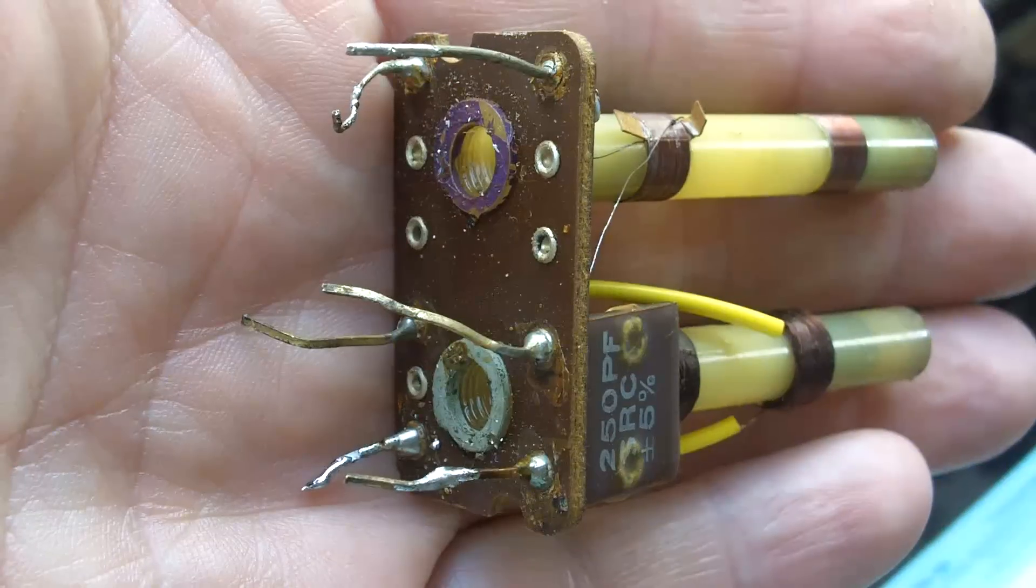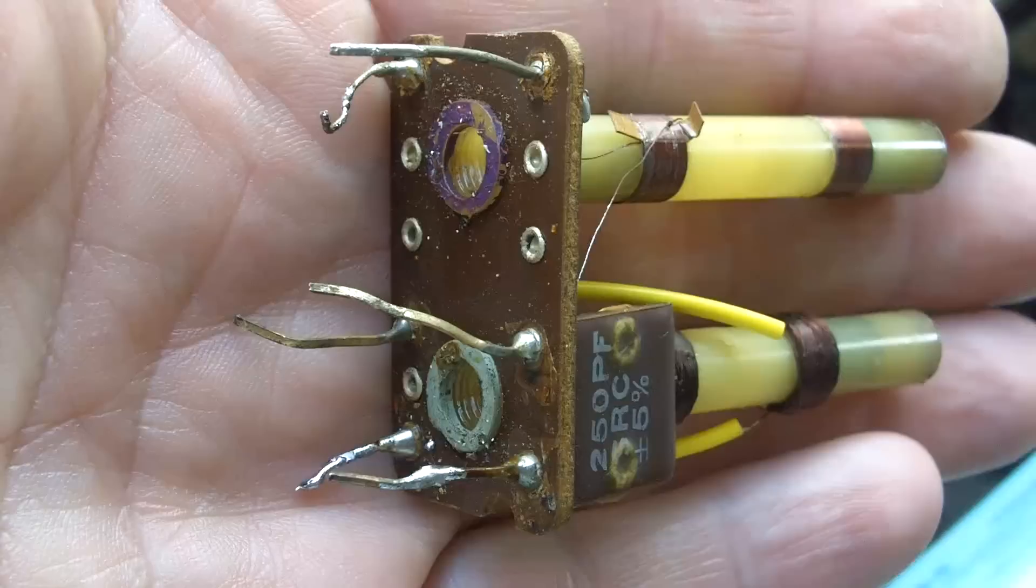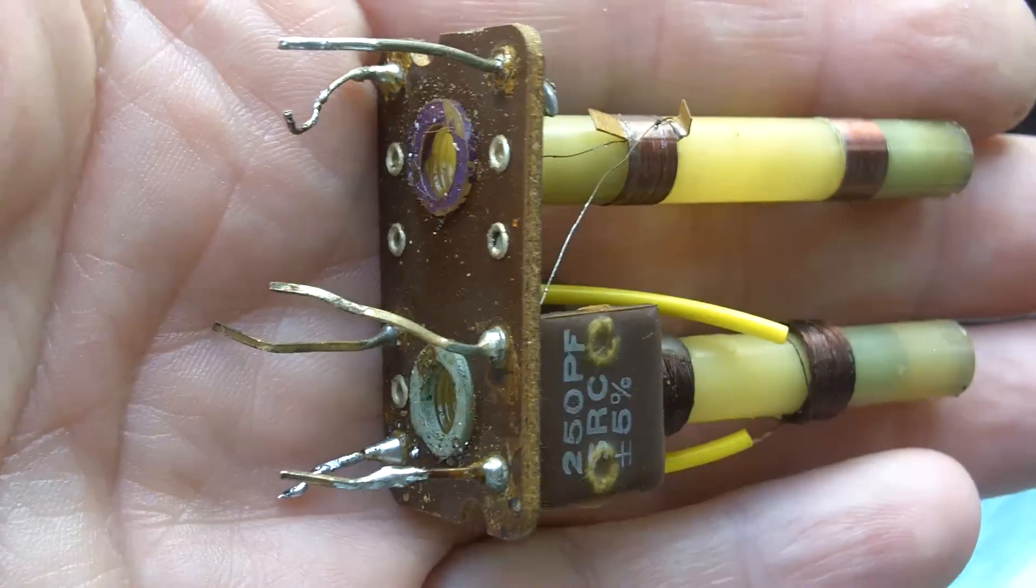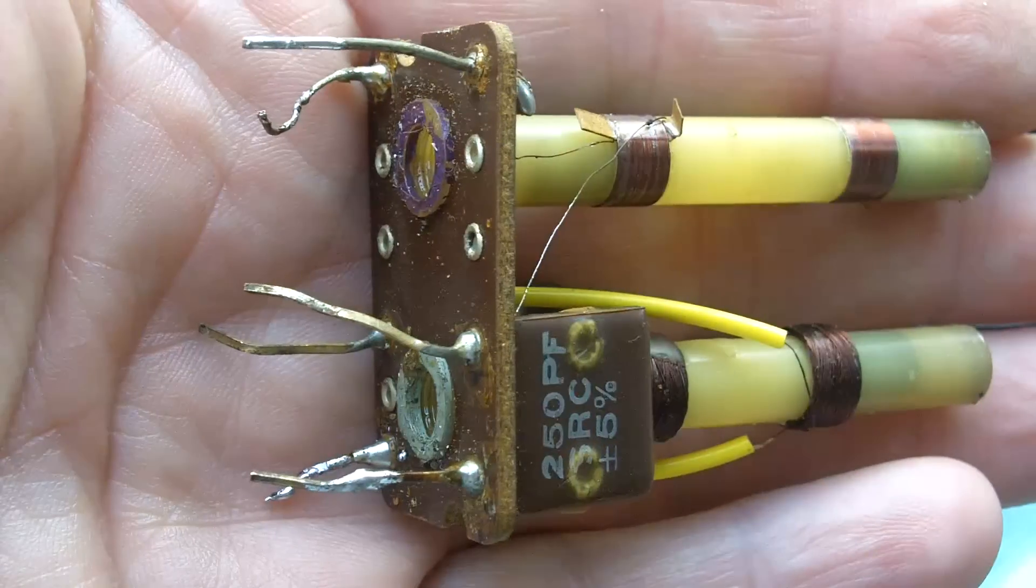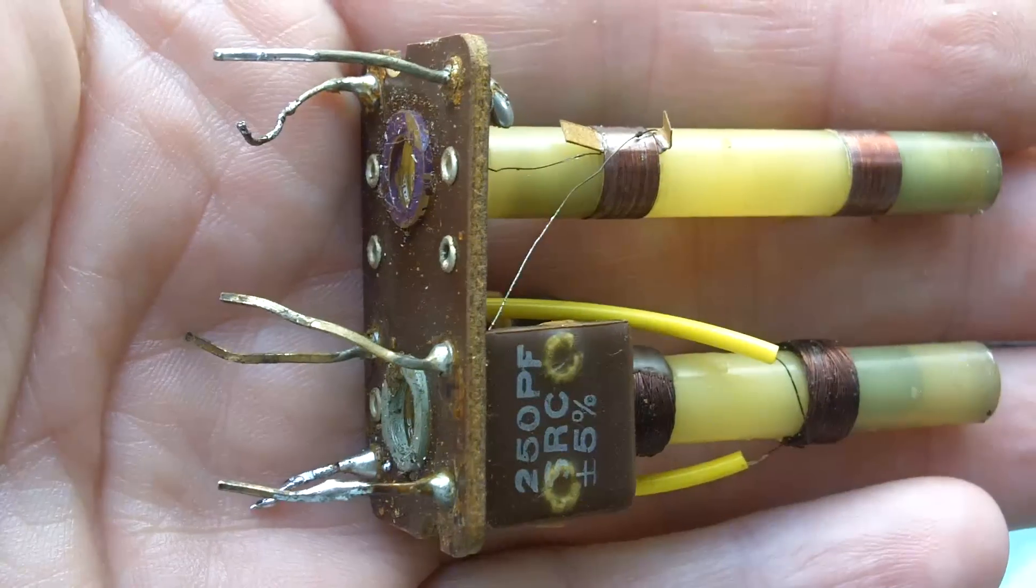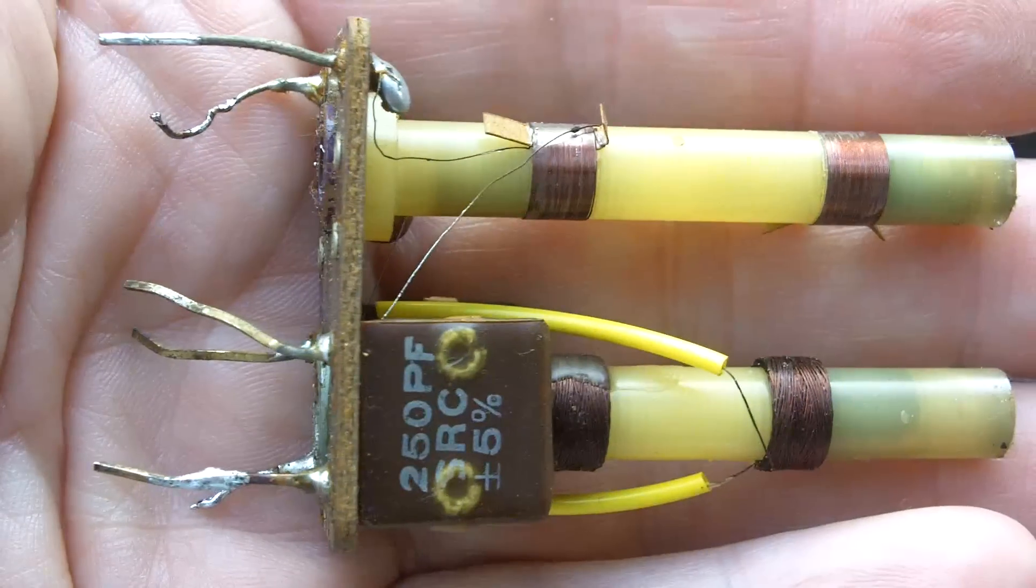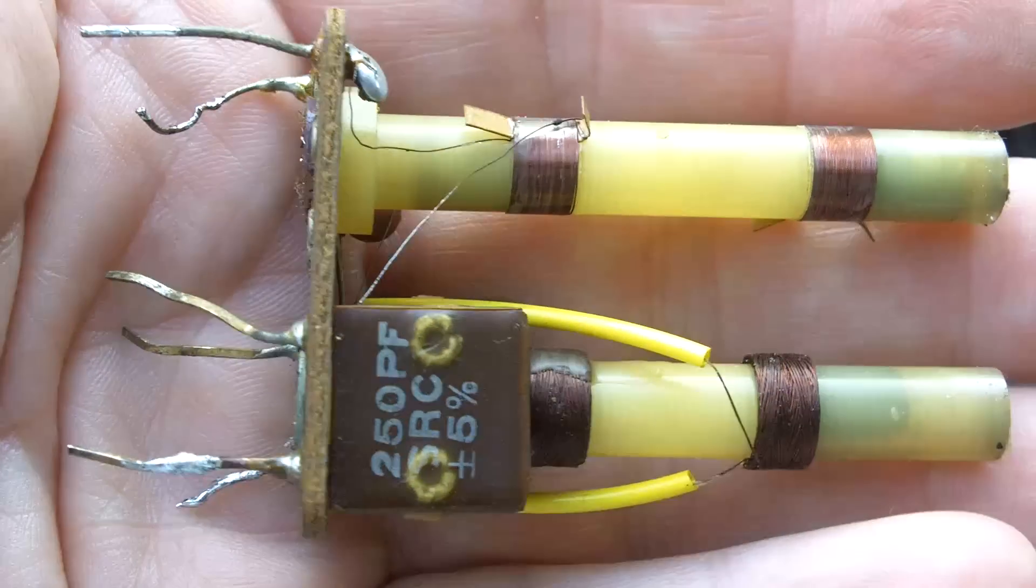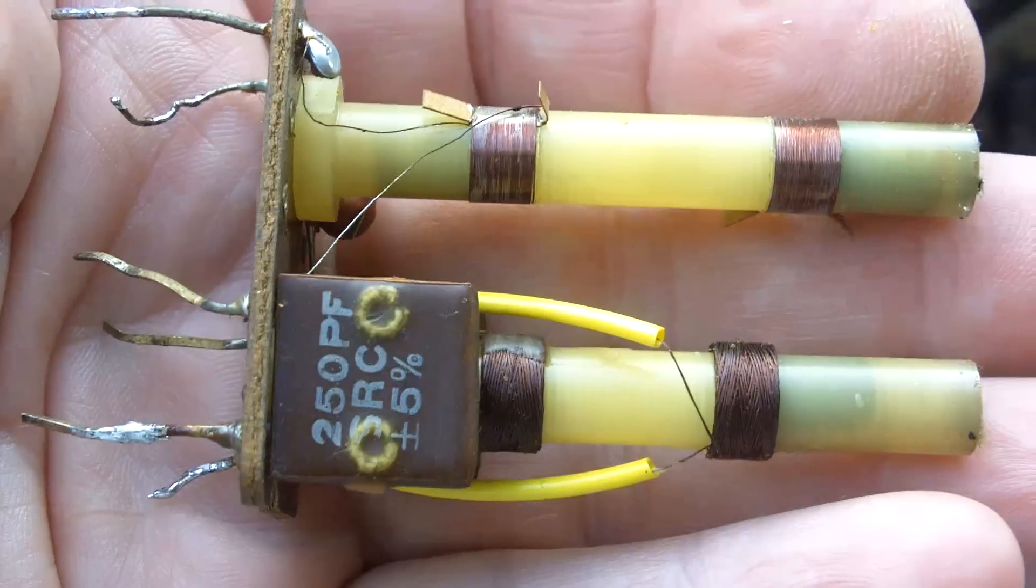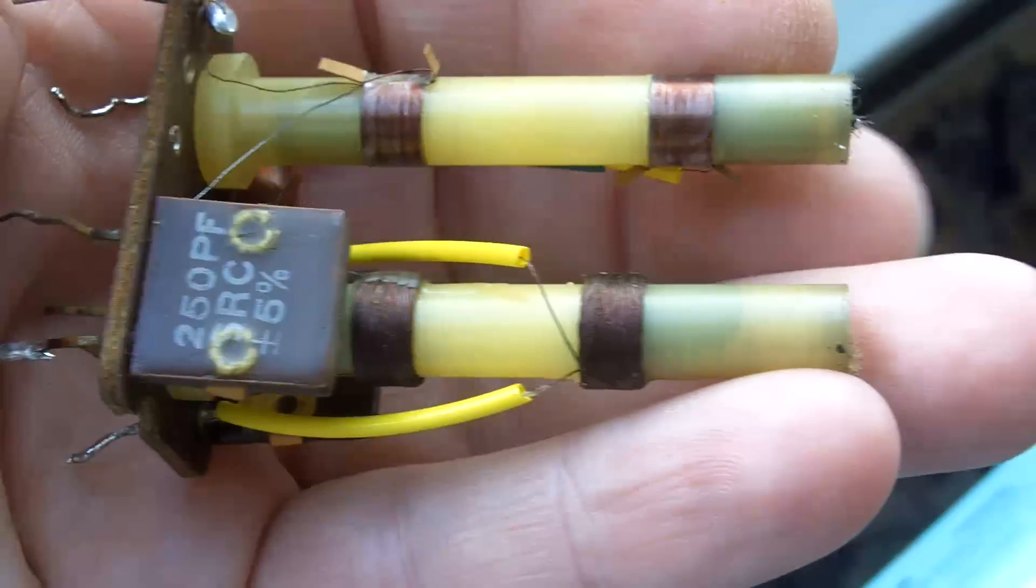Before we leave the IF transformer I'd like to point out a couple of things. First of all the precise frequency that the transformer is tuned to or peaked to is not critical. What is important however is that all of the transformers in a given group are tuned or peaked to an appropriate frequency. In this radio the FM coils are tuned to 10.7 MHz and the AM coils are tuned to 470 KHz.